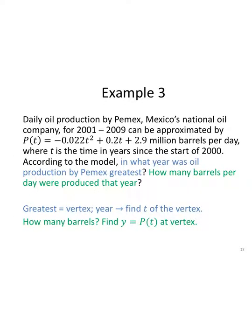So here's an example. Daily oil production by Pemex, Mexico's national oil company, for 2001 through 2009 can be approximated by this given function. And this is in millions of barrels per day and t is time in years since the start of 2000. Now that's fine. It's not too overwhelming but there's kind of a lot going on. What do I need to do with it? According to the model, in what year was oil production the greatest?